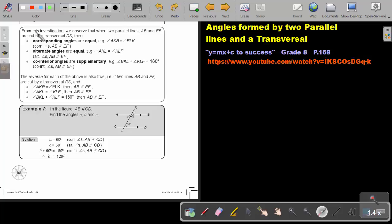Now, from this investigation, for the video on this investigation, please follow this link. So from this investigation, we observed that when two parallel lines AB and EF are cut by a transversal RS, then corresponding angles are equal.